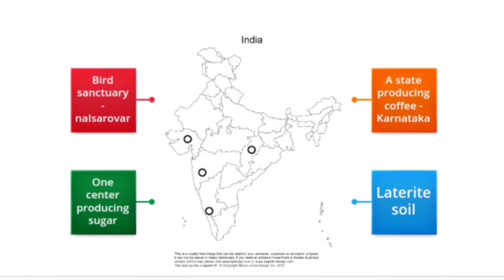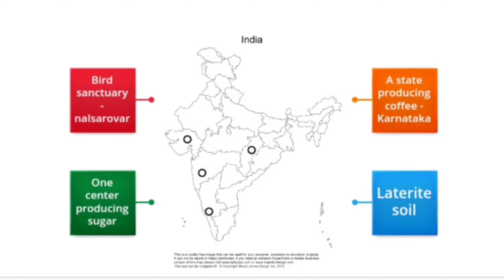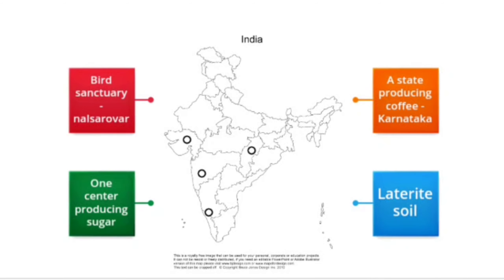There are four questions we will solve one by one: bird sanctuary Nal Sarovar, a state producing coffee Karnataka, one center producing sugar, and laterite soil.